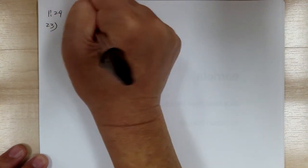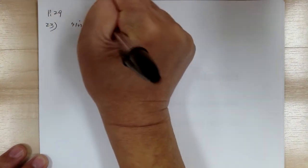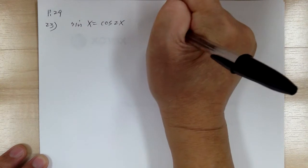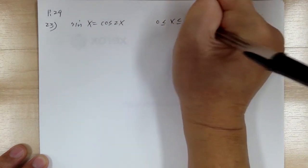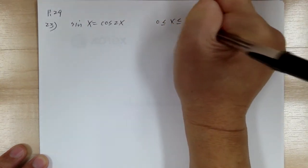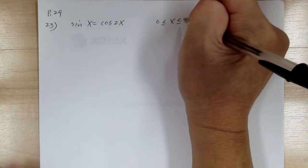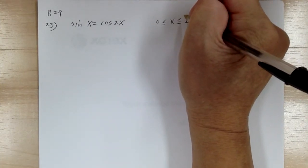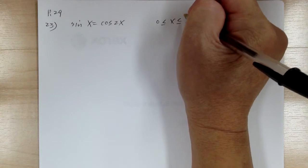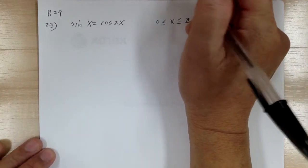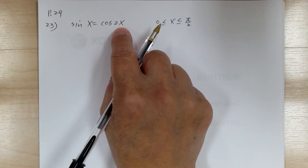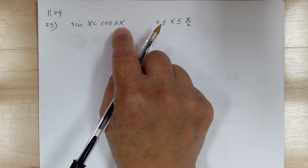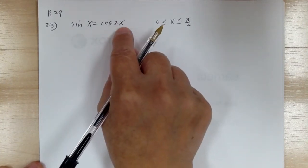Next problem: if sine x equals cosine of 2x and x is between 0 and pi over 2, you're looking for x. Since this involves sine, for the double angle formula for cosine there are three choices, and since this is sine, we're going to use the form with sine.